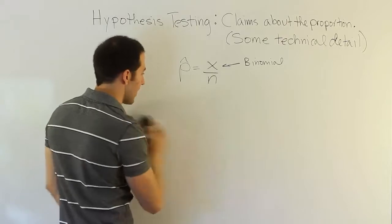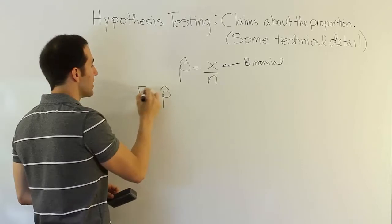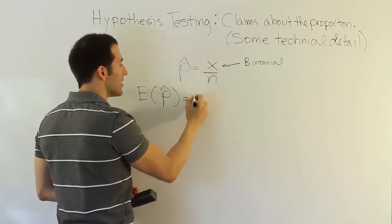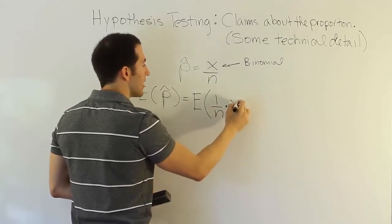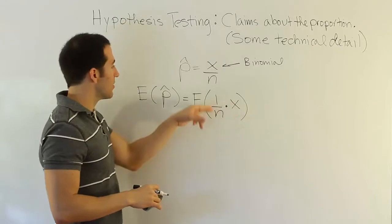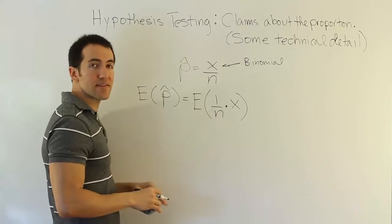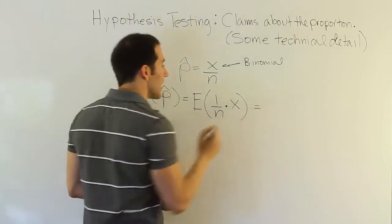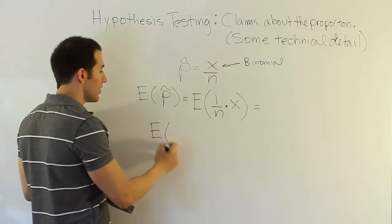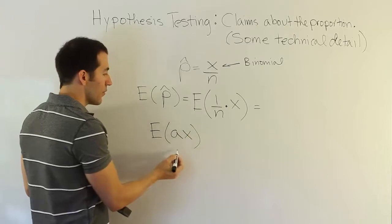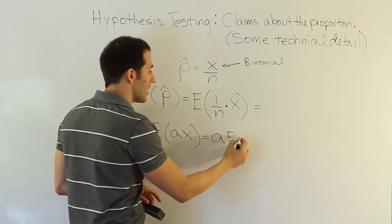It turns out that we can define p-hat. So if I want to know the expected value of p-hat, I can say that that's the same as finding the expected value of 1 over n times x. Because remember that x times 1 over n is the same as x over n. And then what we can do is to look at a very special rule. This rule is nice. It's a rule for expectation, and it says that if you want to know the expectation of something like a times x, where a is a constant, it turns out that it's just a times the expected value of x.